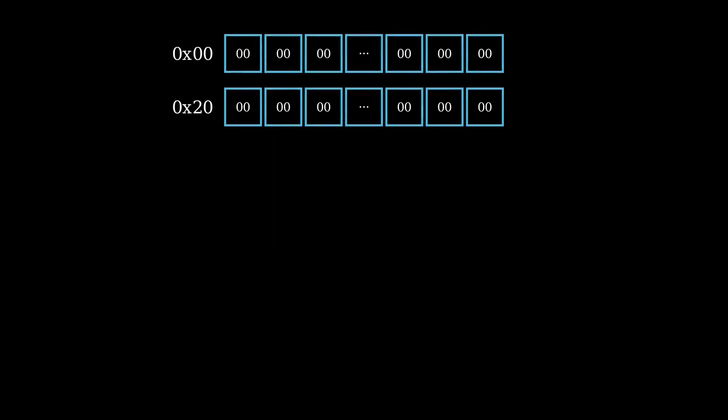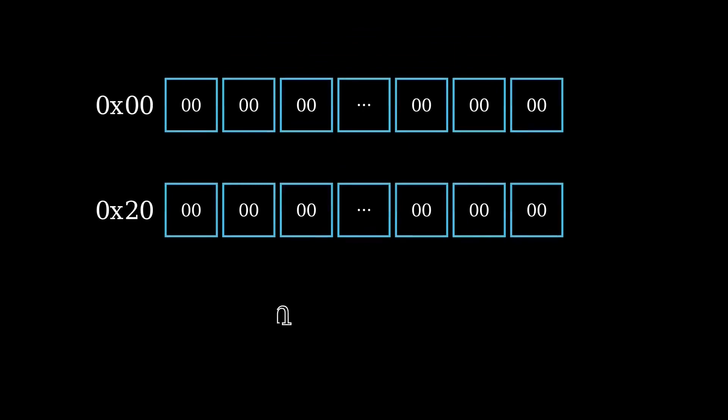To store data into memory, the function mStore, which is accessible inside an assembly block, must be executed. It takes in two inputs, P and B. P is the location of memory to start writing the data, and from here 32 bytes will be written. The second input, B, is the data to store, and this is 32 bytes.